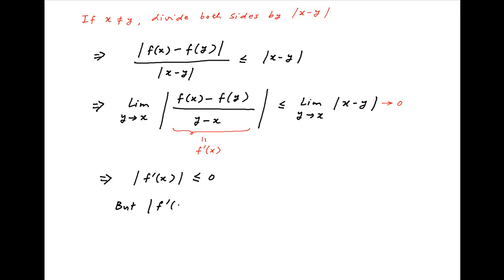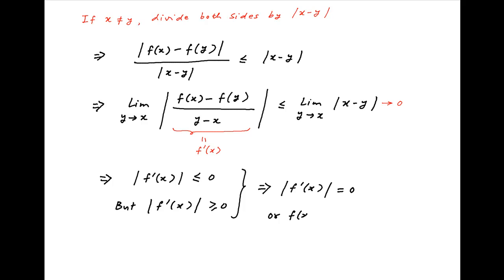But we know that the absolute value of any number is always greater than or equal to 0, therefore the absolute value of f'(x) is also greater than or equal to 0. Both conditions are satisfied together only when the absolute value of f'(x) equals 0. It therefore follows that f(x) must be a constant, which is the required result.